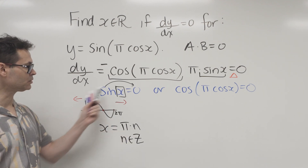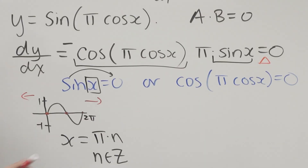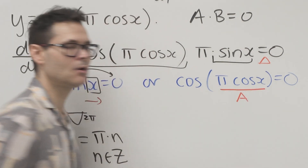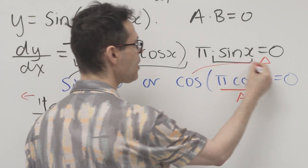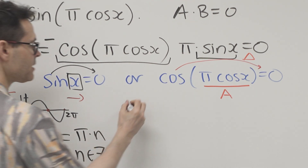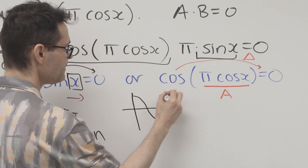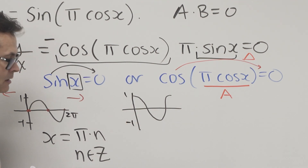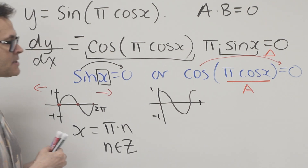Now let's tackle the harder equation: cos(pi·cos(x)) = 0. For a moment, forget the inside function — just ask: for what angles is cosine equal to zero? I'll use the cosine wave, which maximizes at one, minimizes at negative one, and completes itself every 360 degrees.